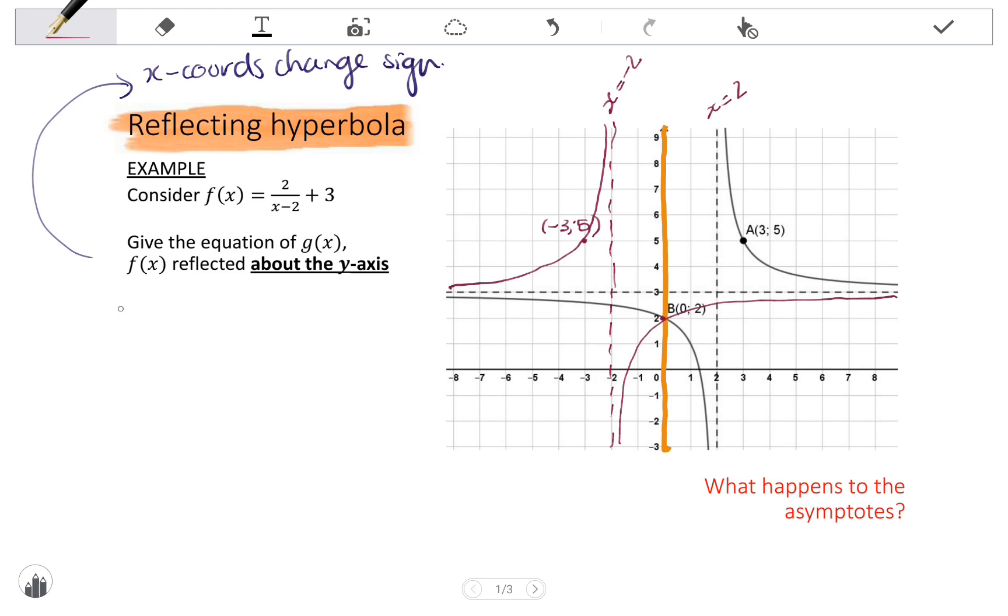Now, looking at the equation of the reflected graph, it says give the equation of g of x. So, if we have g of x equals, remember that only the x-coordinates change sign. So, it will be the graph of f, but instead of positive x, I'm going to have negative x. That means, wherever I have an x, I'm going to replace it with negative x. So, I have that that is equal to 2 over negative x minus 2 plus 3.